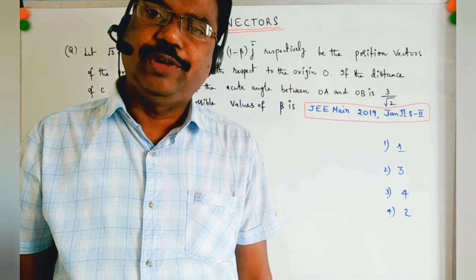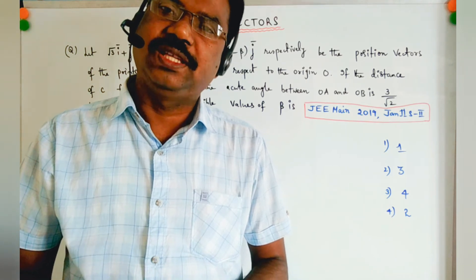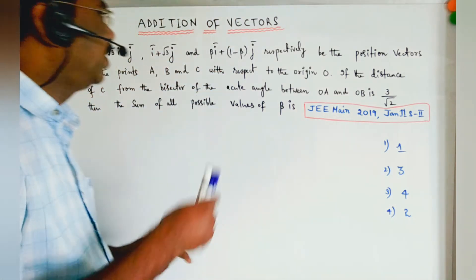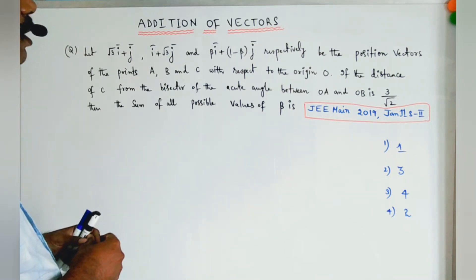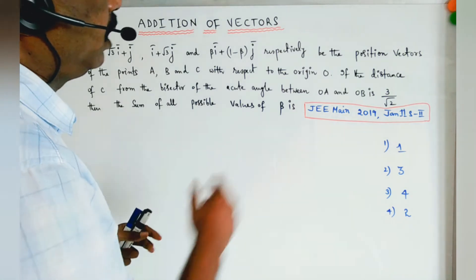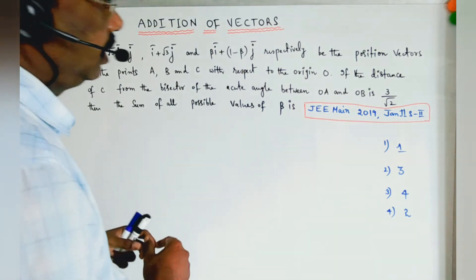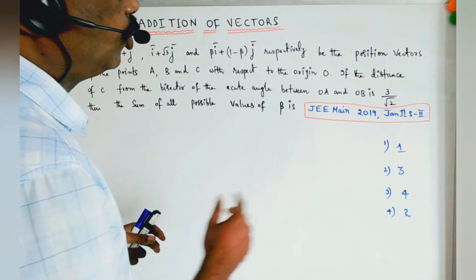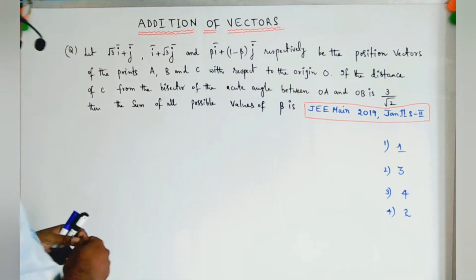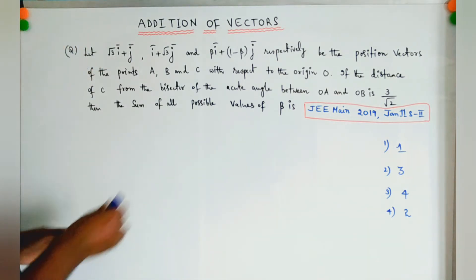Hi students, if you like this video please subscribe and share it, don't forget to like it. Now the topic is vectors — problems on addition of vectors. Let √3·i + j, i + √3·j, and β·i + (1-β)·j be the position vectors of points A, B, and C with respect to the origin. If the distance of C from the bisector of the acute angle between OA and OB is 3/√2, then find the sum of all possible values of β.